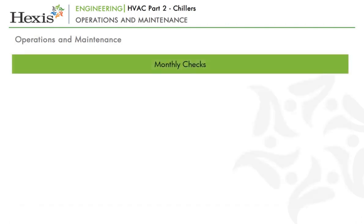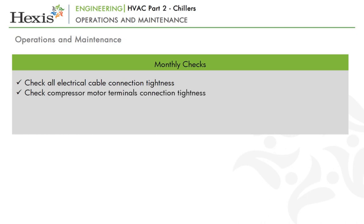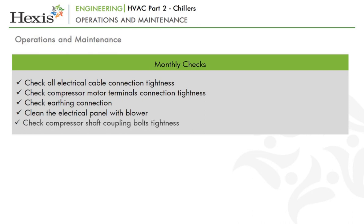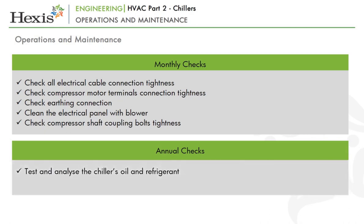Here is the list of monthly and annual checks. Monthly checks include: checking all electrical cable connection tightness; checking compressor motor terminal connection tightness; checking earthing connections; cleaning the electrical panel with a blower; and checking compressor shaft coupling bolts tightness. Annual checks include: testing and analyzing the chiller's oil and refrigerant; and conducting eddy current testing to check the chiller tubes.